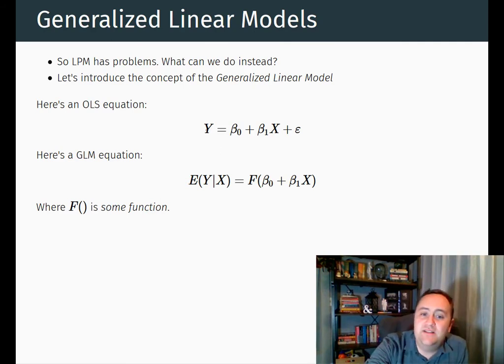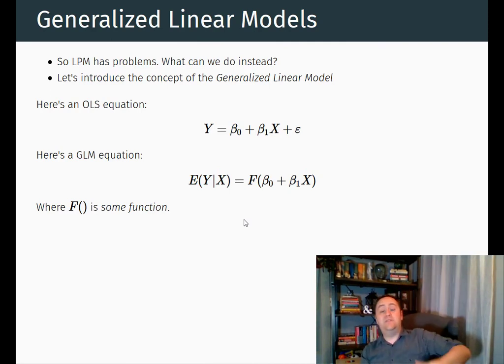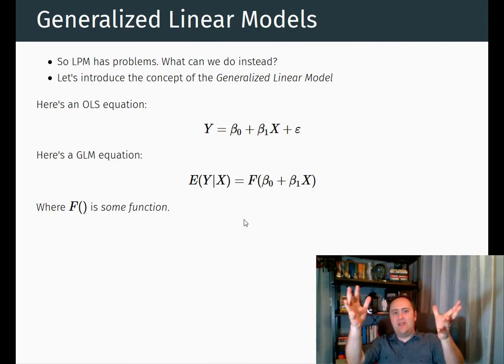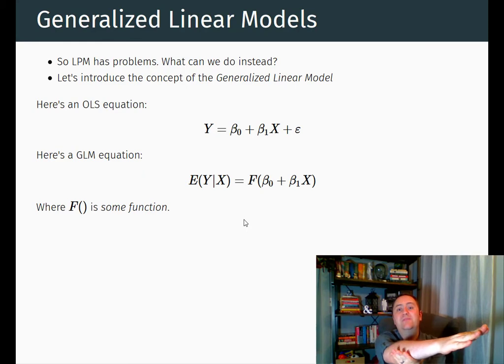So a generalized linear model has a lot of nice features. It works with a lot of the same intuition as ordinarily squares, and it's the same idea. So here we had an OLS equation, y is a function of x, but we're just going to take this exact same thing, this beta 0 plus beta 1 x, and we're just going to run it through some function, and then we're going to use that to predict y. So instead of predicting y with that straight line, we're going to take that straight line, run it through a function, and then use the function of that straight line to predict y. That's the only difference, so we're generalizing it.